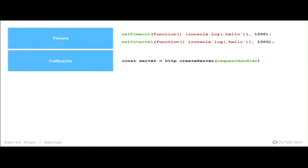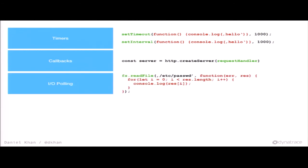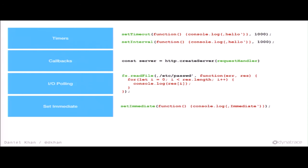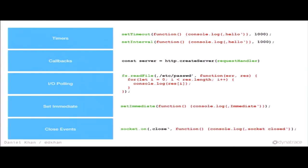For IO polling, you create it by doing a simple readFile — here we poll for system events or the thread pool to see if anything is done, then put the callback on the callback stack. For setImmediate, you just call setImmediate and it's processed in that phase. Then we have close events, processed with something like socket.on('close').